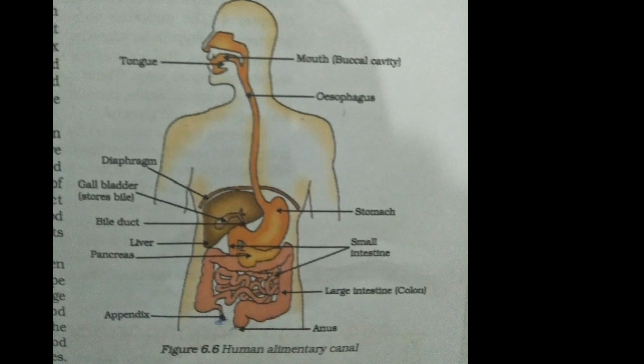The food is moved around the mouth using our muscular tongue. It is necessary to move the food in a regulated manner along the digestive tube so that it can be processed properly in every part. The lining of the canal has muscles that contract rhythmically in order to push the food forward. This peristaltic movement occurs all along the gut.